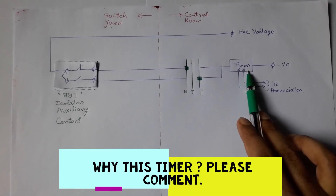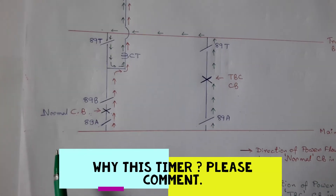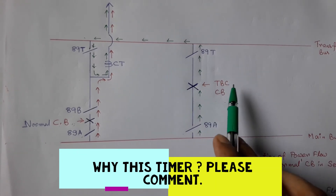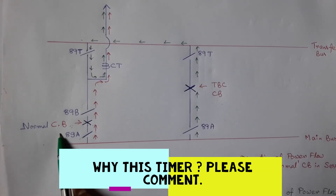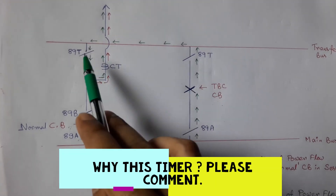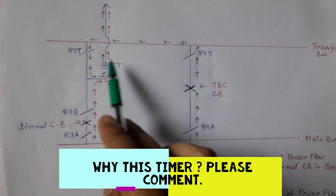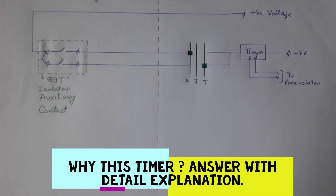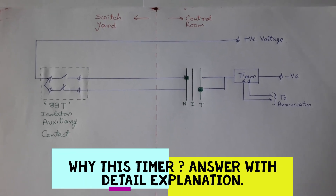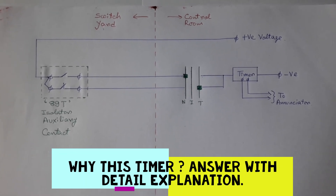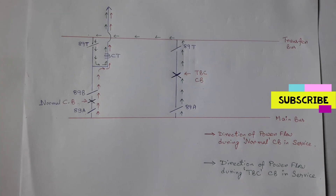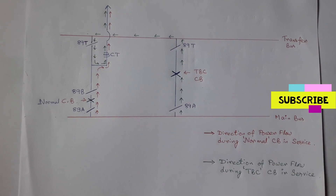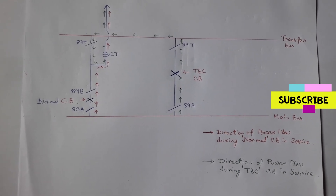But why do we use this timer? This is because during the load diversion process from normal CB to TBC-CB, or from TBC-CB to normal circuit breaker, there may be a situation where all five isolators are closed at the same time. During that condition, this scheme may provide a wrong indication, and to avoid that wrong indication, this timer is used. Hope you understand this topic. For more videos like this, stay tuned by subscribing to this channel and don't forget the bell icon.